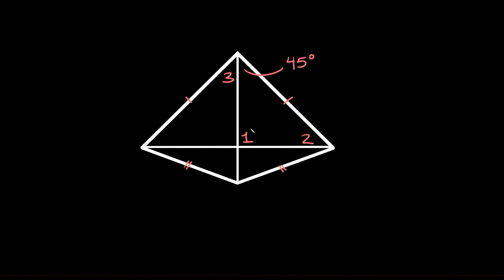So first of all let's start with angle one over here. One easy way we can solve for angle one is by seeing that it's right where the two diagonals intersect. Whenever you have two diagonal lines that intersect inside of a kite like this, it creates a 90 degree angle. So angle number one is equal to 90 degrees.